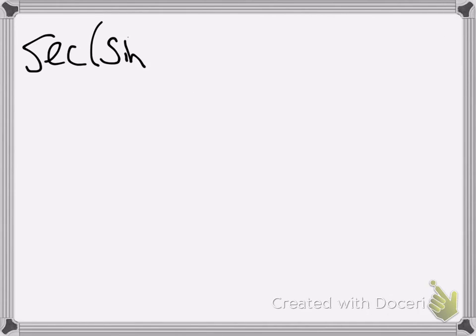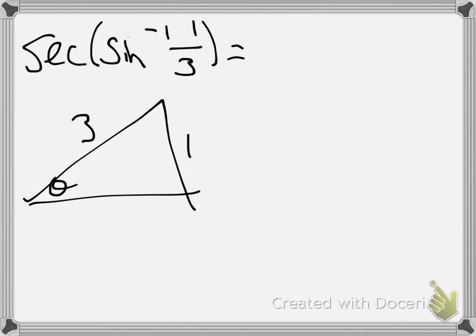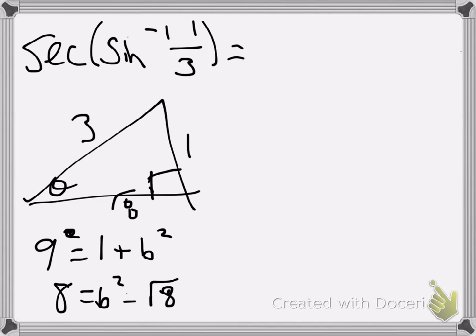Let's look at another one. The secant of sine inverse of 1 third. Again, filling in my triangle. In this case, sine is opposite over hypotenuse. So I make my opposite side to theta 1 and my hypotenuse 3. This is a right triangle, even though it doesn't look like it is. We'll use our Pythagorean theorem. 9 equals 1 plus b squared. That makes b squared 8. b would be root 8. I'll stick root 8 in as my adjacent side.